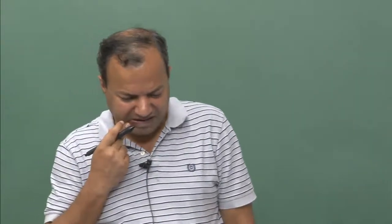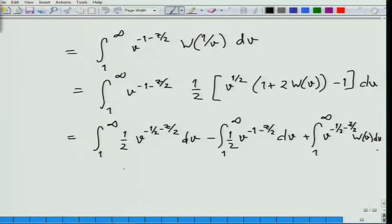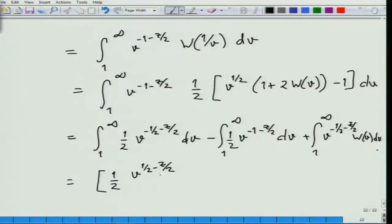This is where we were last time. We were trying to evaluate this integral, which is not too difficult to fix now. Let us continue and see what happens to the first integral — that is basically half of v to the minus half minus z by 2. This would be v to the half minus z by 2, divided by half minus z by 2, from 1 to infinity.